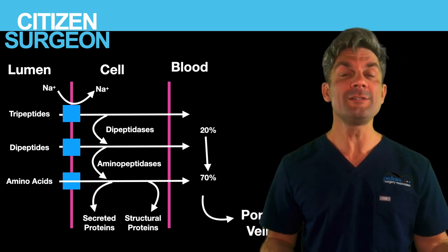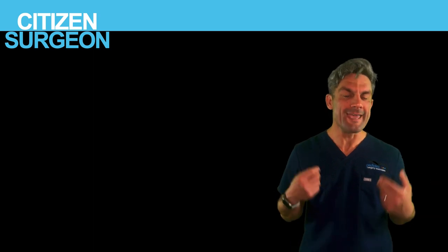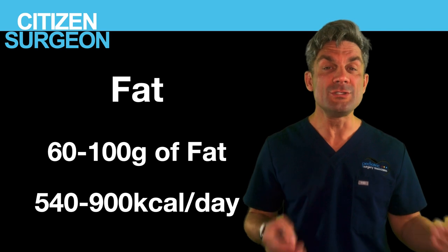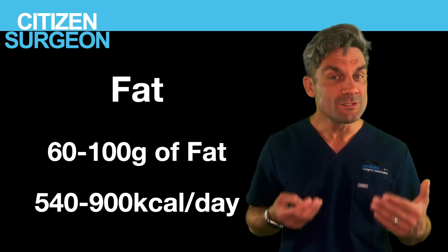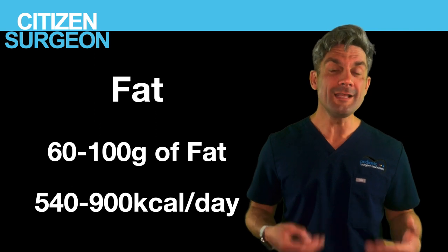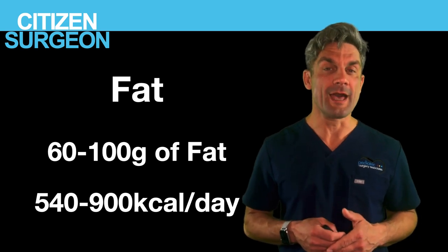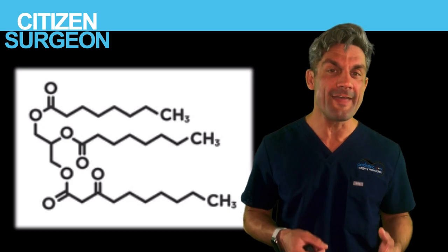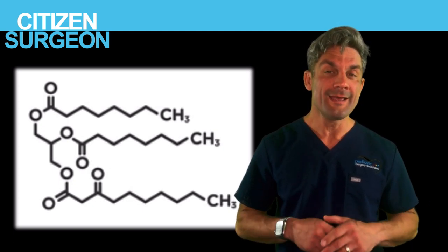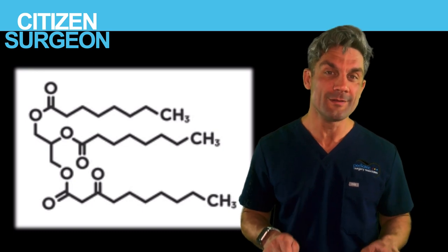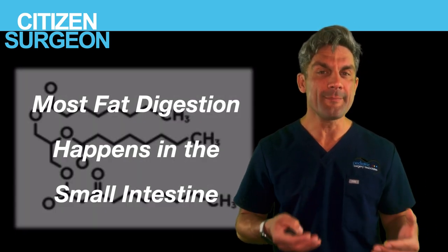Now let's get to fat. We consume about 60 to 100 grams of fat per day — nine kilocalories per gram — so that's 540 to 900 kilocalories per day from fat. Triglycerides are the most abundant fat we consume: three fatty acids on a glycerol molecule. It's important to know that most fat digestion happens in the small intestine.